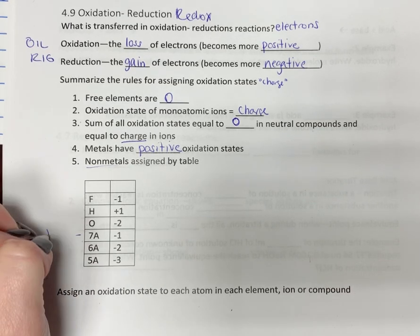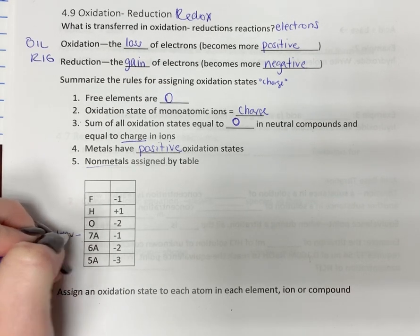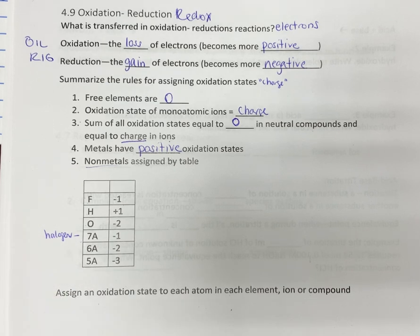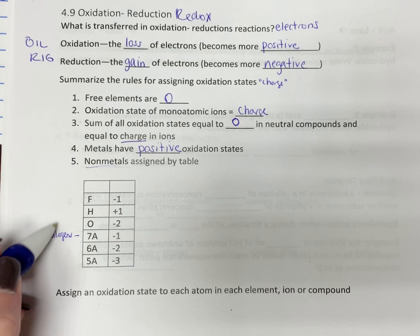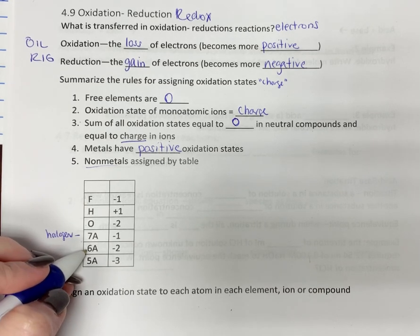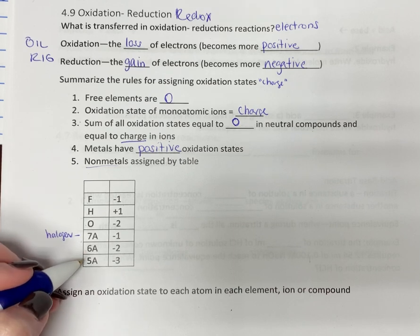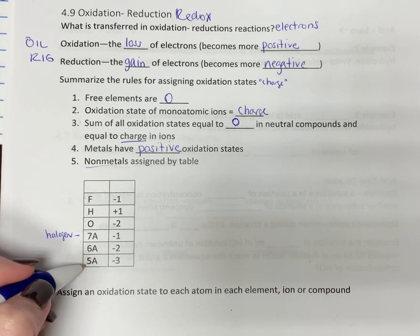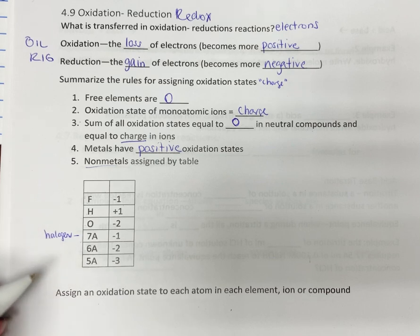All right, 7A, these are going to be your halogens. So chlorine, bromine, iodine. So this is all your other halogens besides fluorine. This is the row to the left of the halogens, so it has oxygen and sulfur. And then 5A, this is nitrogen and phosphorus.